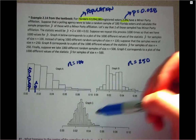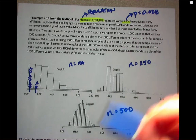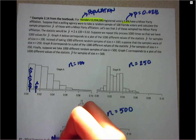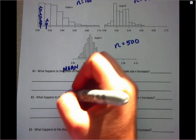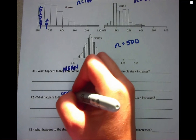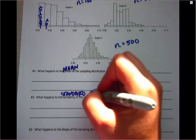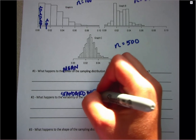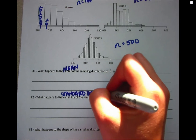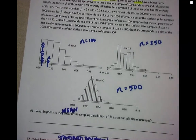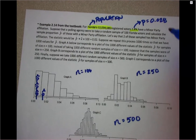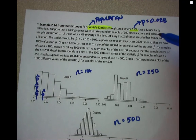We want to look at what happens to three areas of interest: the mean, or center; the standard deviation, or spread and variability; and the shape of the sampling distribution as we change sample size. We know that p is 0.028, and that's the value we want to estimate with p-hat.